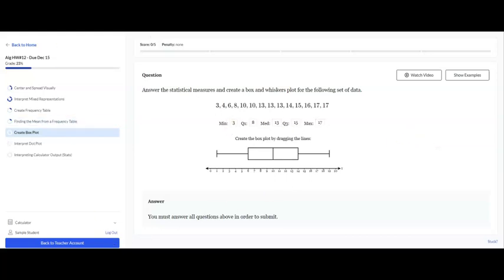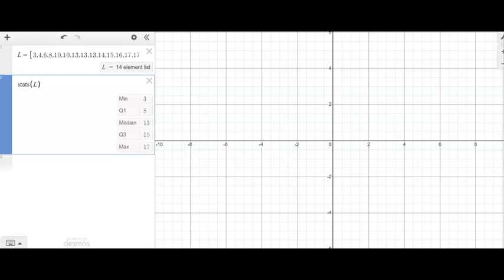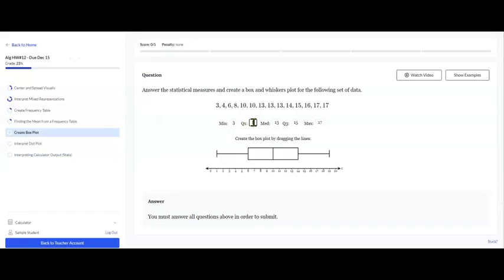Alright, so once I have used this calculator to calculate my stats, and once I've typed in all of the appropriate numbers, I then have to start clicking and dragging the five number summary here. So my minimum should be at 3, so I'm going to click and drag my median, my Q1 is at 8, my median is 13, my Q3 is 15, and my max is 17. So now I've created the box plot based on those five numbers.